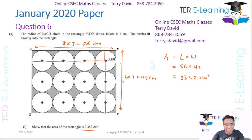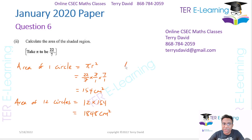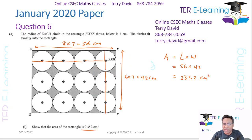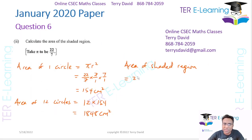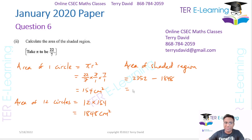Now you know the area of the whole rectangle. So if you want to get the area of the shaded region, just subtract those two numbers. Area of shaded region is going to be 2352 minus 1848, and that's going to give me 504 cm squared.